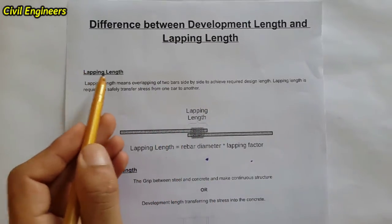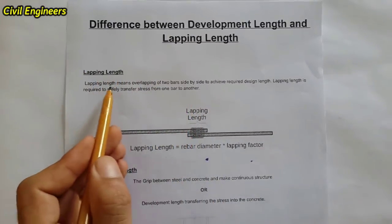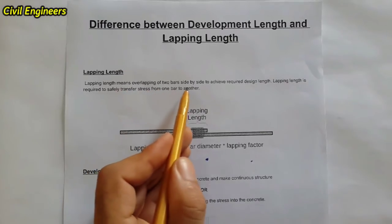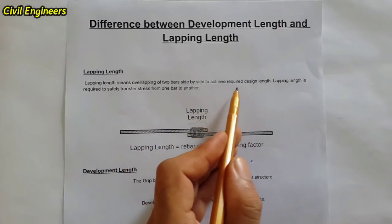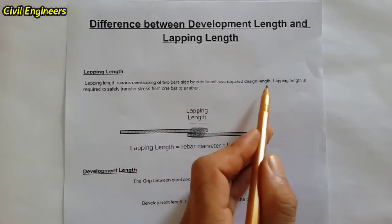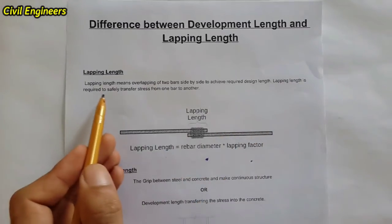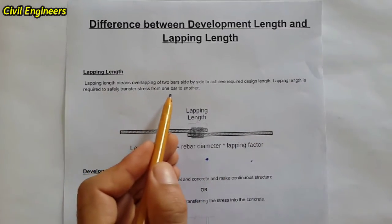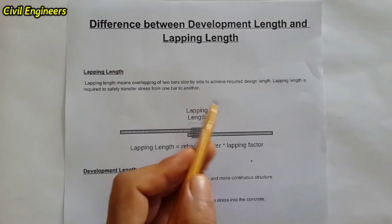First, I will define what lapping length is. Lapping length means the overlapping of two bars side by side to achieve the required design length. Lapping length is required to safely transfer stress from one steel bar to another.